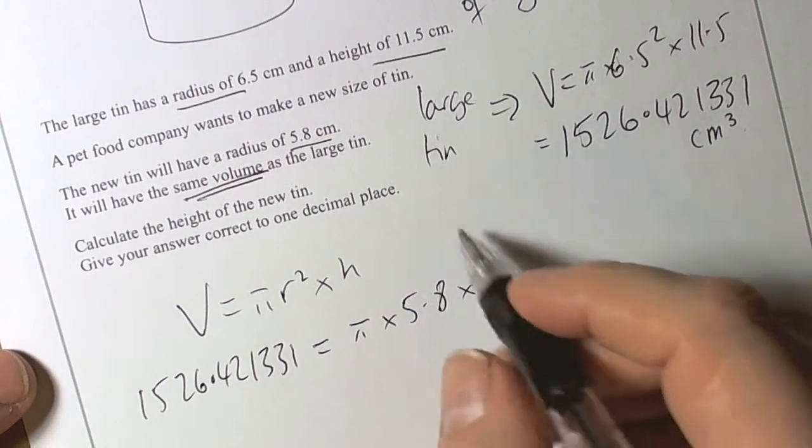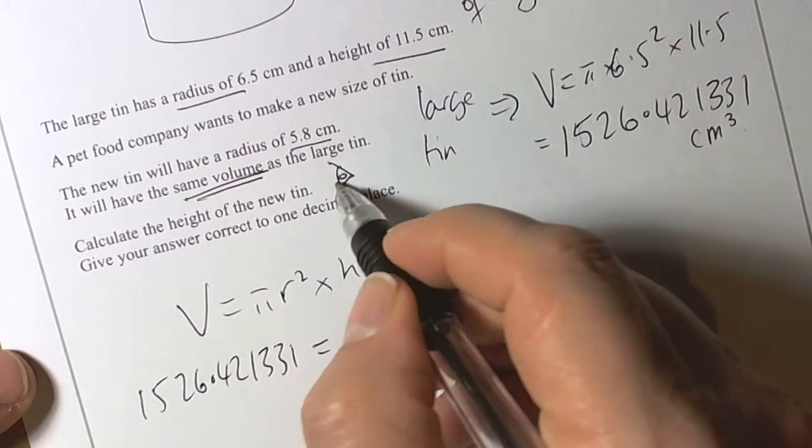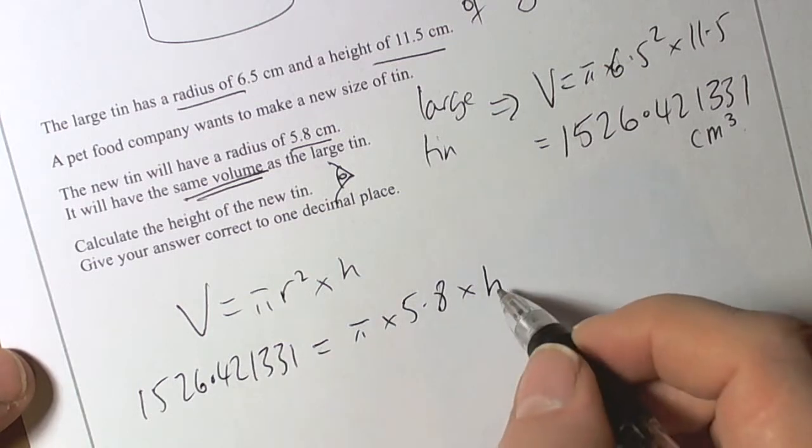And then we're going to times by the height. We don't know the height, because that's what the question actually wants. The trigger for this was find the height of the new tin. This is a case of rearranging this to make it h equals.